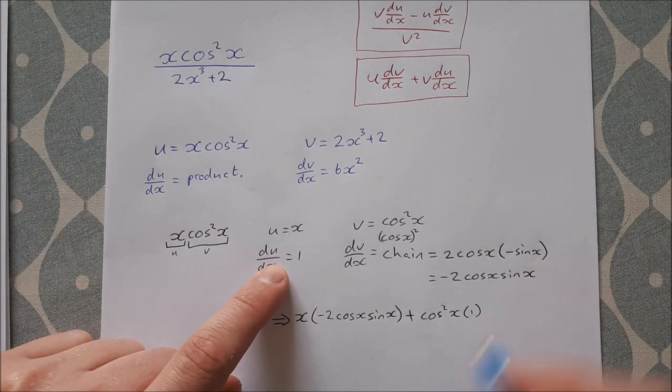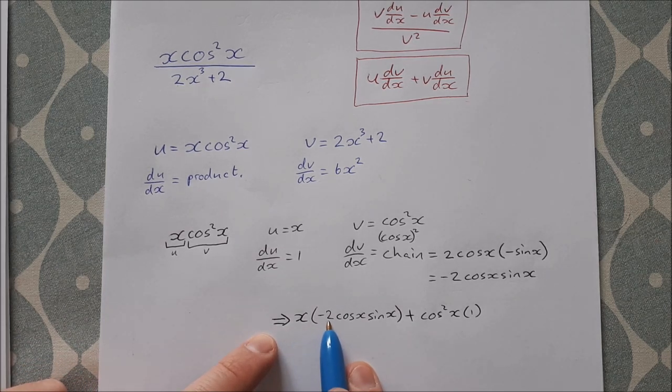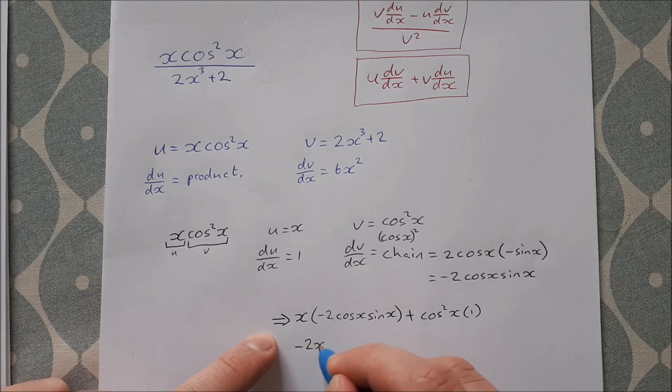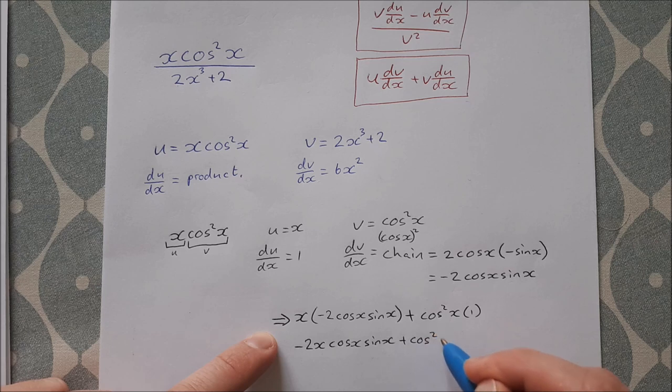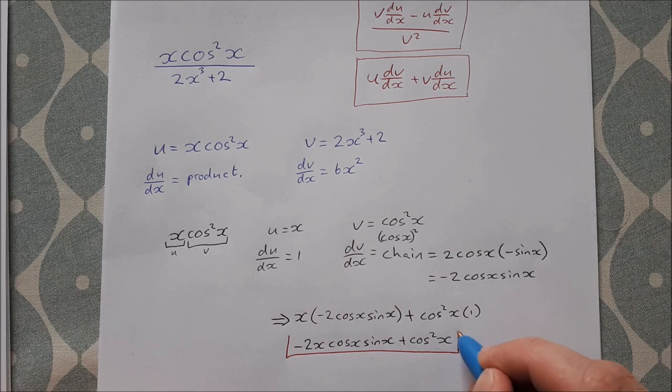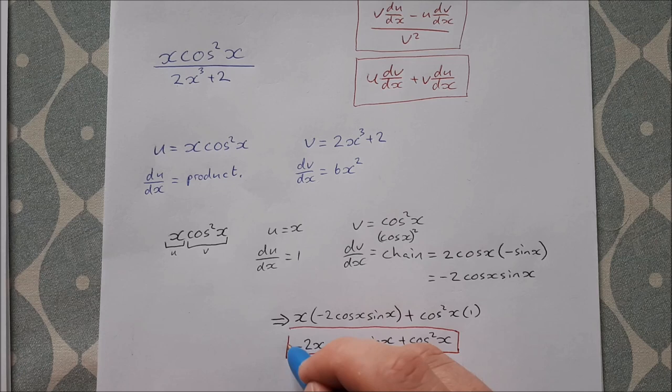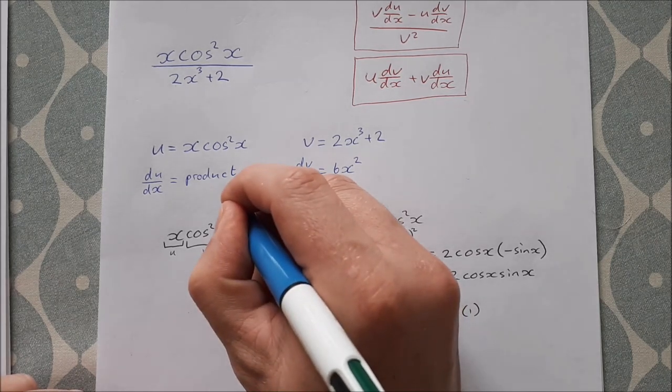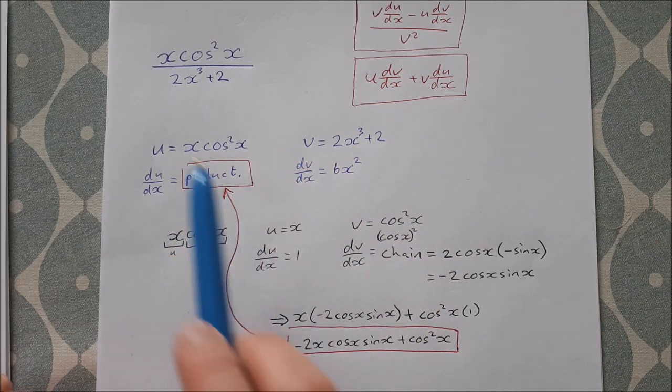So let me tidy this up a little bit. I can just multiply in this x in here, so I get -2x cos x sin x, and then cos²x times 1 is just cos²x. So that there is my product, so that goes into here—my product. So now I'm back to doing this, which was my quotient rule.